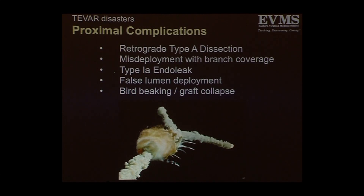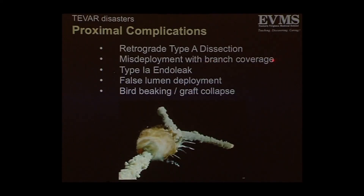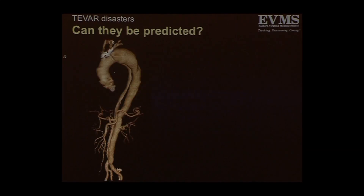Really just proximal TVAR complications. Obviously the most devastating one is retrograde type A dissection — it is preventable in some patients. I'm going to talk about accidental branch coverage, type 1 endoleak, and graft collapse. I've got three cases I'm going to discuss in the next couple of minutes.